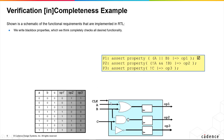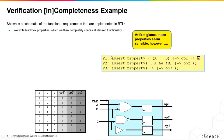Here's an example schematic. Those are the requirements, and this is a property set we hope will check all behaviors of the design. At first inspection, these look like a perfectly reasonable set of properties to write. For example, this property says: if I've got A or B, on the next cycle OP1 should be true — which would appear to check this OR gate and this flip-flop.